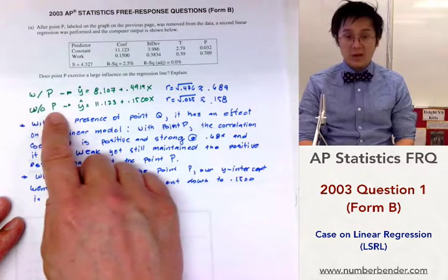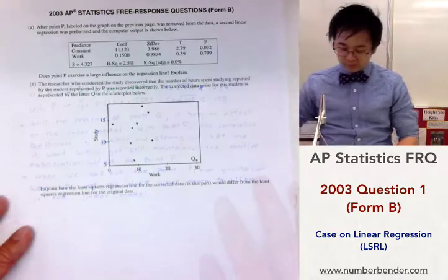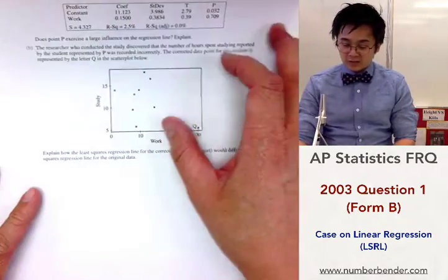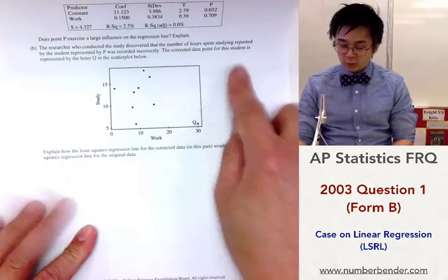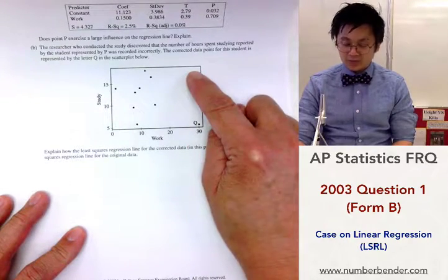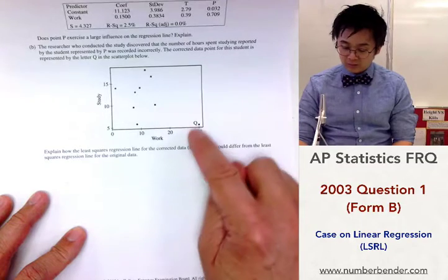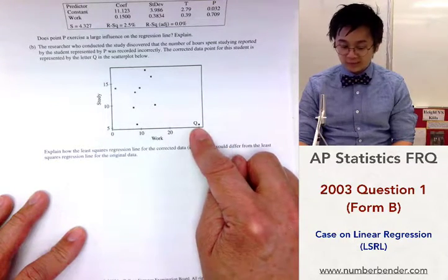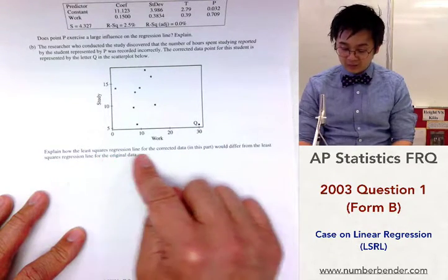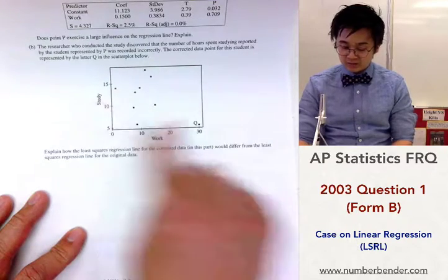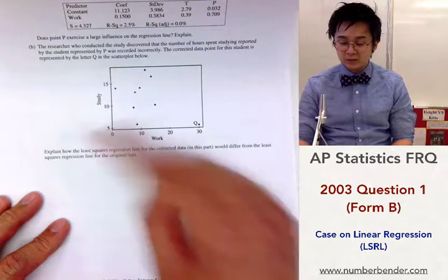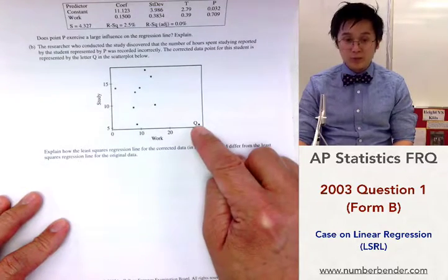In letter b, we have a different situation because now there was an error on our dataset. Instead of that data, which was here a while ago, now the point went down over here. And from here, we're asked to explain how the LSRL for the corrected data would differ from the LSRL from the previous linear model when this point was still here.